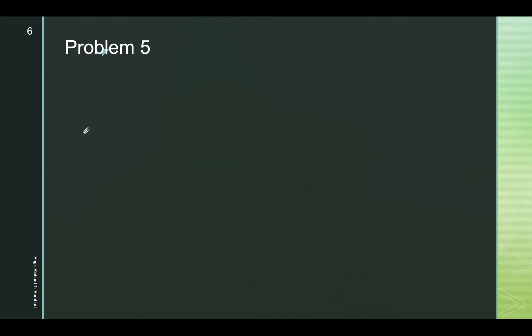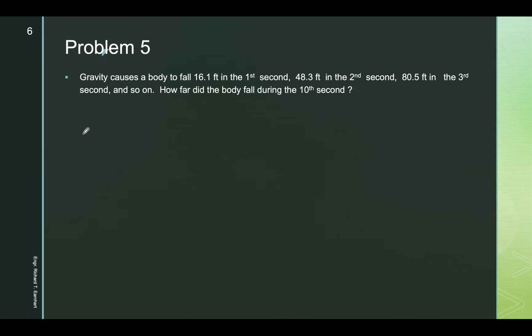Gravity causes a body to fall 16.1 feet in the first second, 48.3 feet in the second second, 80.5 feet in the third second, and so on. How far did the body fall during the 10th second? Note that the given numbers form an arithmetic progression.